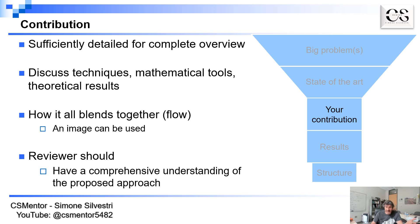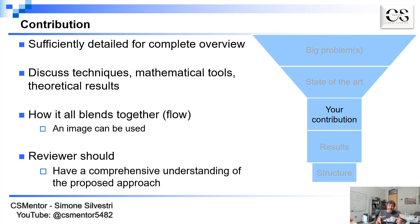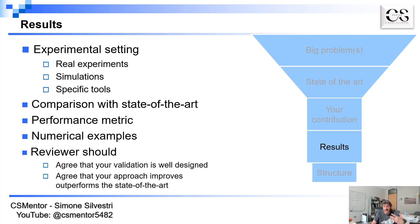Next, describe your solutions and provide a sufficiently detailed description so the reviewer and reader can understand what is going on in the rest of the paper: the different components, the techniques used, the mathematical tools, and the theoretical results. You also want to say how all these different pieces are composed together. Generally it's a good idea to have an image that puts all these different components together and shows the flow of the technical contribution. What you want is for the reviewer to walk away with a clear understanding of your technical contributions and how you are going to solve the problem stated earlier.